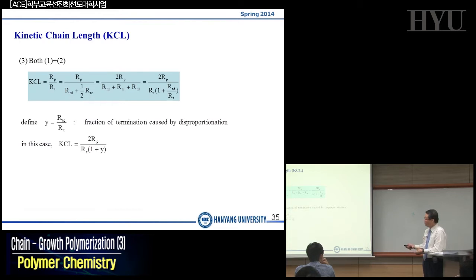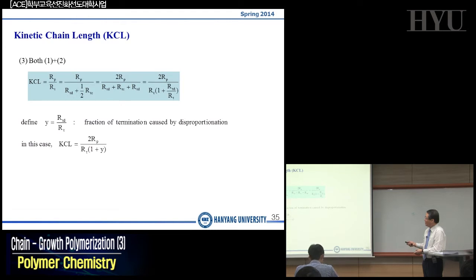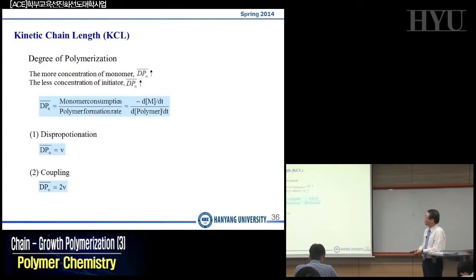In the case of coupling, the kinetic chain length will be two times the terminated species, which is the kinetic chain length of the chains. If Y is equal to 1, then kinetic chain length is equal to RP divided by RT. So degree of polymerization is equal to kinetic chain length in the case of disproportionation.